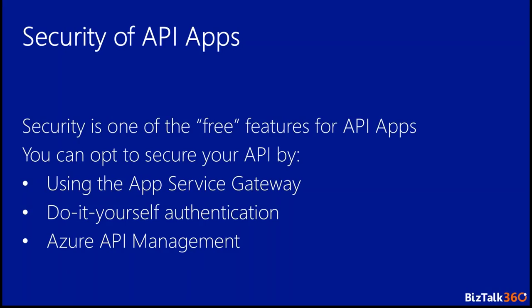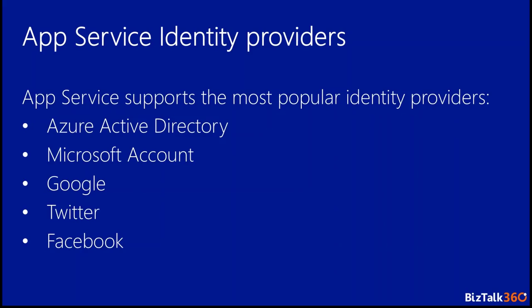Let's talk about security of API apps. This is one of the free features that comes with API apps, but you don't have to use it. You can choose from a few approaches: you can use the App Service gateway, which is what I used for this example. You can do a do-it-yourself authentication — make your API publicly accessible without gateway authentication and implement your own. Or there is another option using Azure API management as a mediator. The App Service supports the most popular identity providers: Azure Active Directory, Microsoft account, Google, Twitter, and Facebook.